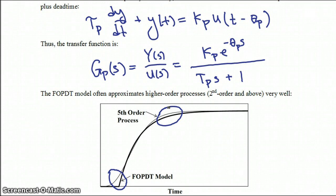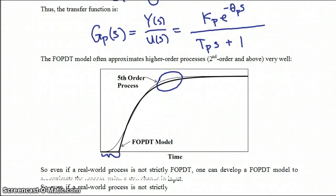As you can see in the first order plus dead time model, the reason why you get deviation here up front is that early on during the period where you're actually having the dead time, nothing is happening to that model.